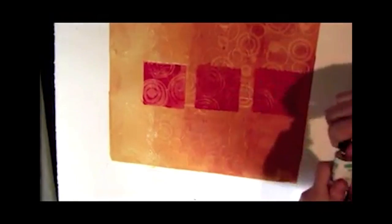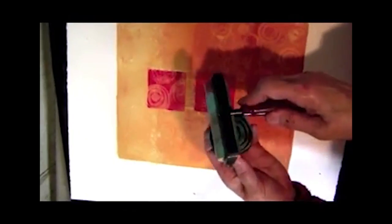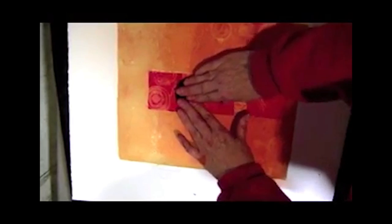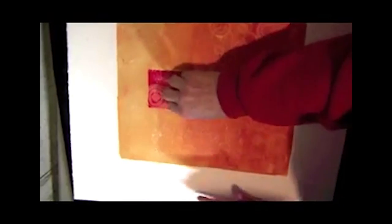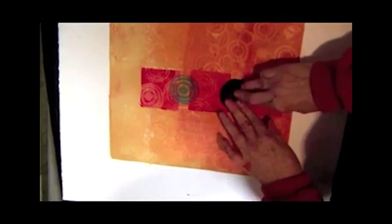I have some teal open acrylic. I'm going to use my brayer just to ink up this stamp and print it right here to unify those two squares. I'm going to do it one more time here, and I think I'm going to want one at the top too, to fulfill our threesome.